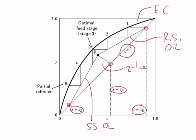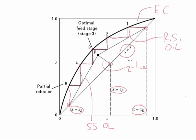What's completed in this plot is the stair-stepping process going from the top of the column where the concentration is xd to the bottom of the column with a concentration equal to xb. We stair-step all the way from the top to the bottom: first stage, second stage, third stage, fourth stage, fifth stage. Note that the fifth stage is a partial reboiler.